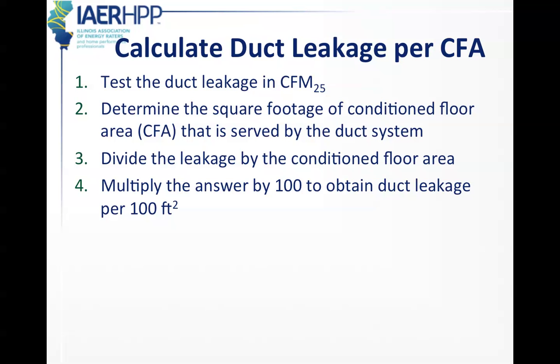Because the code is written in duct leakage per conditioned floor area, that's per 100 cubic feet of floor area, we're going to teach you how to do this right now. First you would test the duct leakage. You're going to determine the square footage of conditioned floor area, CFA, that is served by this duct system that you just tested. It's not the whole floor area of the house. You divide that leakage by the conditioned floor area that is served, and then you multiply the answer by 100 to obtain the duct leakage per 100 square feet. The example would be, when we run the duct testing fan, it tells us that our leakage for this duct system is 118 CFM at 25 Pascals. The system serves 2,300 square feet of this home. We simply take 118 divided by 2,300 and multiply that number by 100. And we would get 5.1 CFM per 100 square feet.